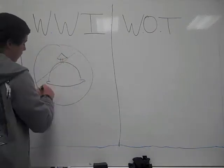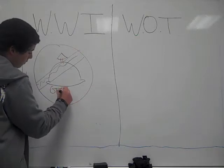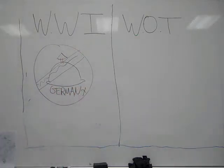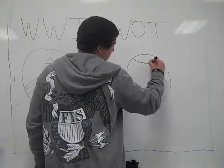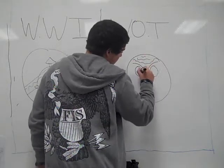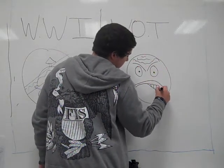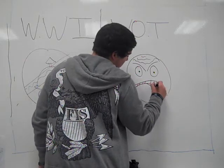The fallout of World War I is that Germany was not allowed to have an army, and for the War on Terror, Al-Qaeda promised that they would seek revenge on the United States for the death of their leader.